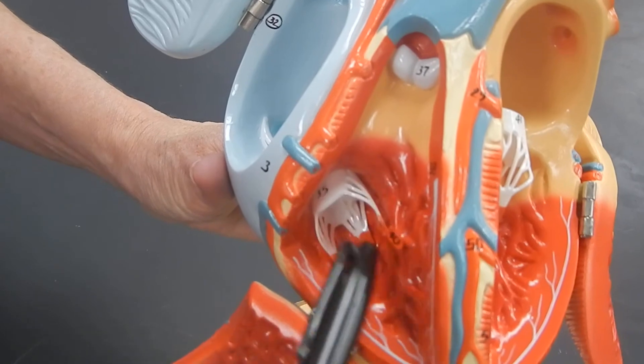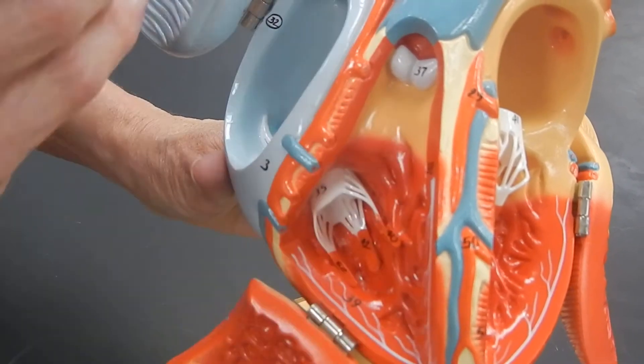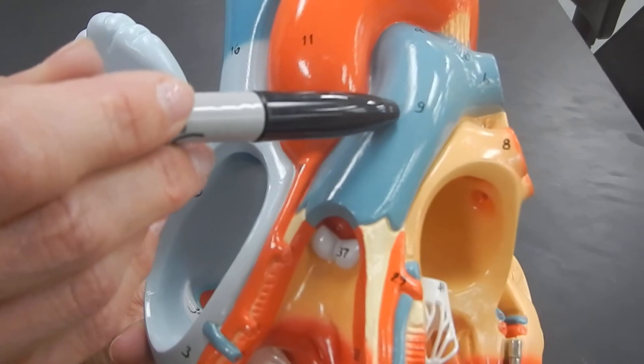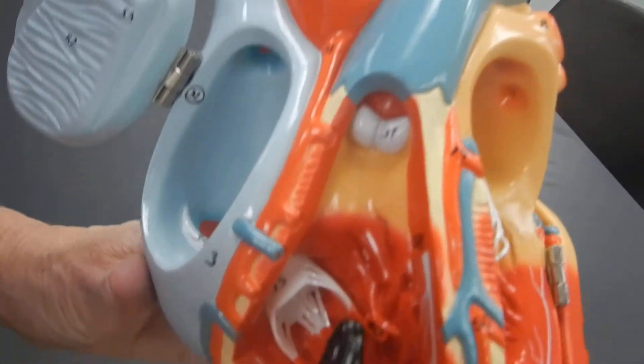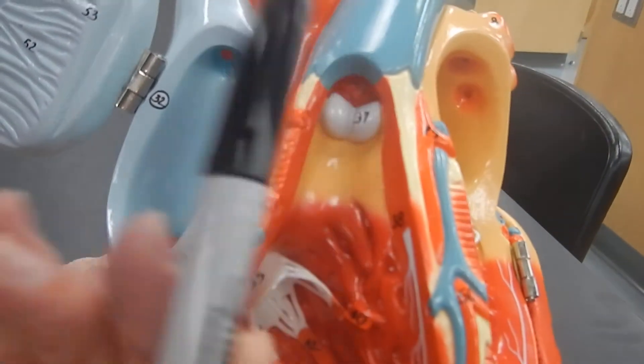Blood is going to leave the right ventricle and go into the pulmonary trunk, which becomes the pulmonary arteries, and it's going to leave through the pulmonary valve.